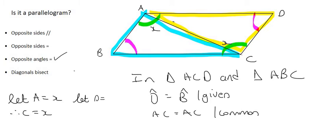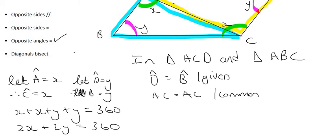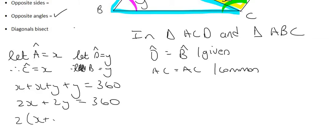We know that all four angles inside any quadrilateral add up to 360°. So X + X + Y + Y = 360, which means 2X + 2Y = 360. Taking out a common factor of 2 gives X + Y = 180 after dividing by 2. So that means this angle plus this angle equals 180.